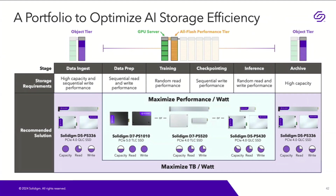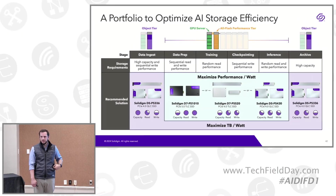At a high level, if you're maximizing your density and want to do that in the most power-efficient way possible, there's no better choice than high-density QLC SSDs. Today, 61 terabytes is our densest U.2 SSD. Coming very soon, announced at FMS, we're going to double that — you'll start to see 122 terabytes that fit in the palm of your hand.